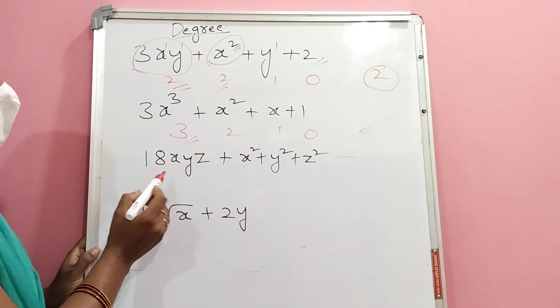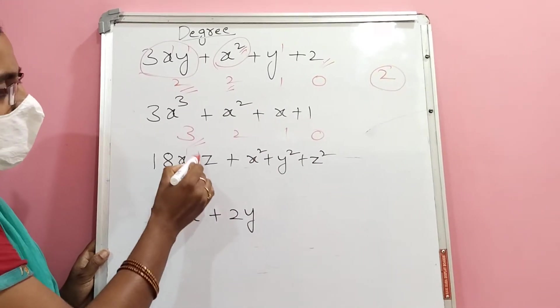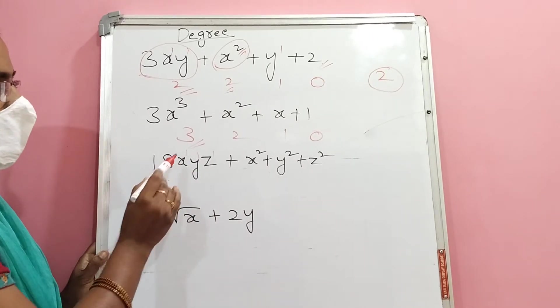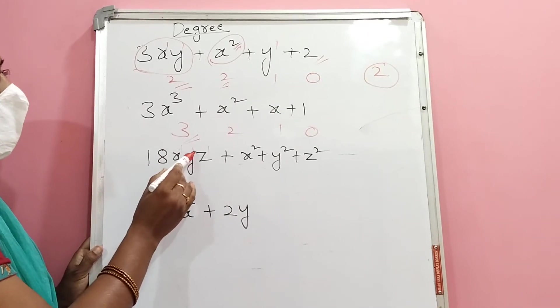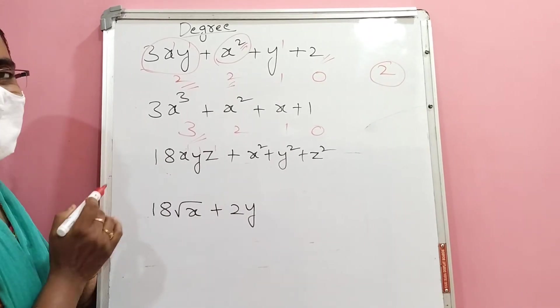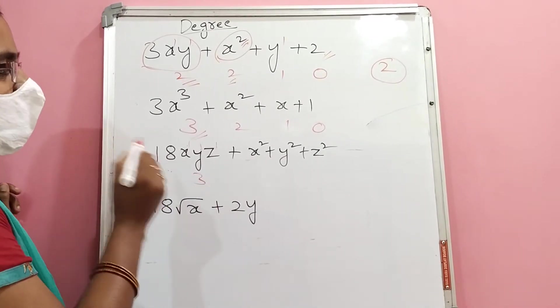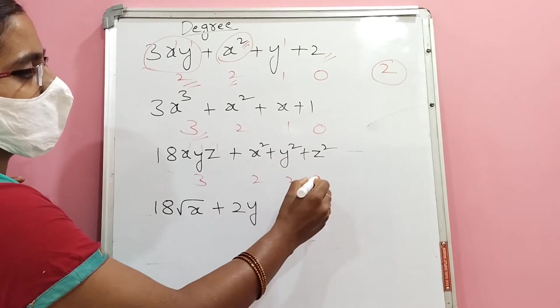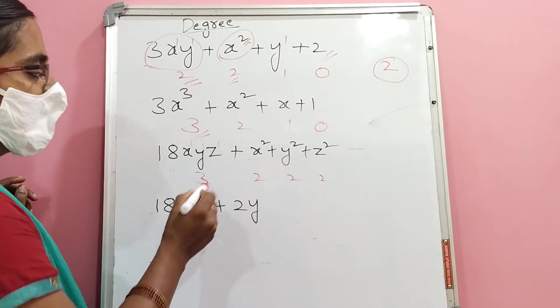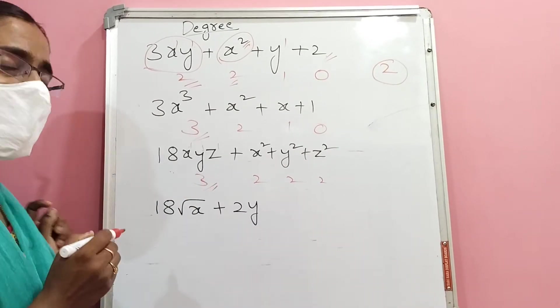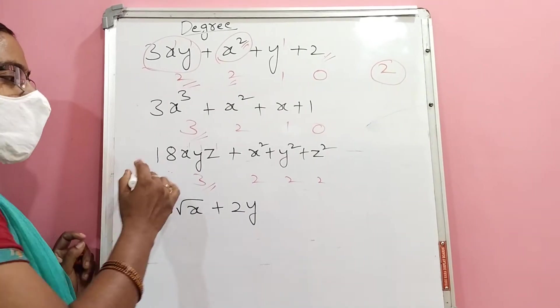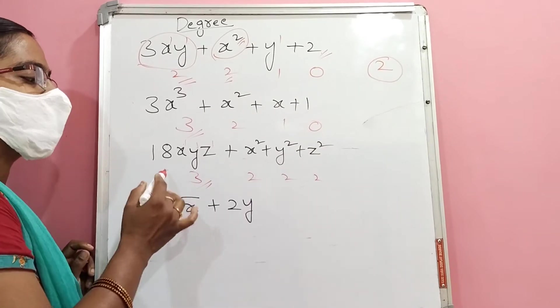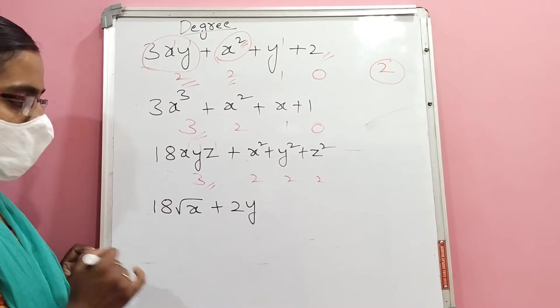For another polynomial, variable powers are 1, 1, and 1. Adding them gives 1+1=2 for one term, and 1+1+1=3 for another. The individual term degrees are 3, 2, and 2. The highest is 3, so this polynomial's degree is 3.